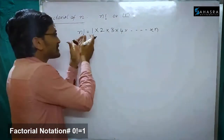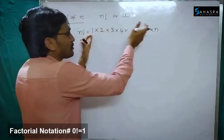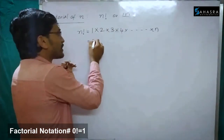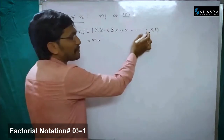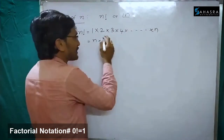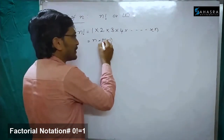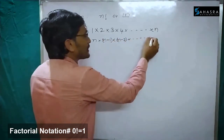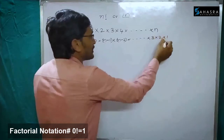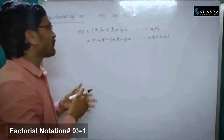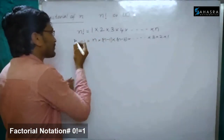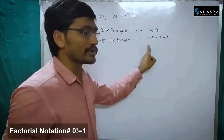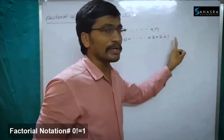This also can be written from first to last. Now I want to write from last to first. So n into what is the previous number of n? Nothing but n minus 1 into n minus 2 into and so on, 3 into 2 into 1. So n factorial can be written as n into n minus 1 into n minus 2 into and so on, 3 into 2 into 1.